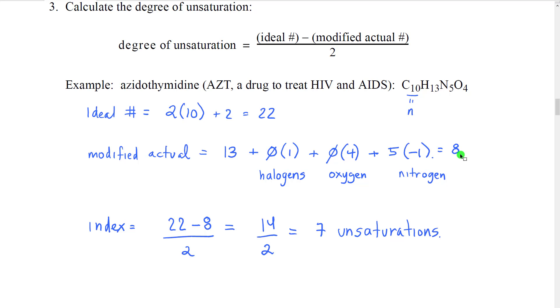To determine the index of unsaturation or the degree of unsaturation, what we're going to do is first look at how many hydrogens are missing by taking the difference between our ideal number and our actual number. So 22 minus 8, we are missing 14 hydrogens. Then we know that there is one unsaturation for every two hydrogens. So we divide that by two, and we get seven unsaturations.